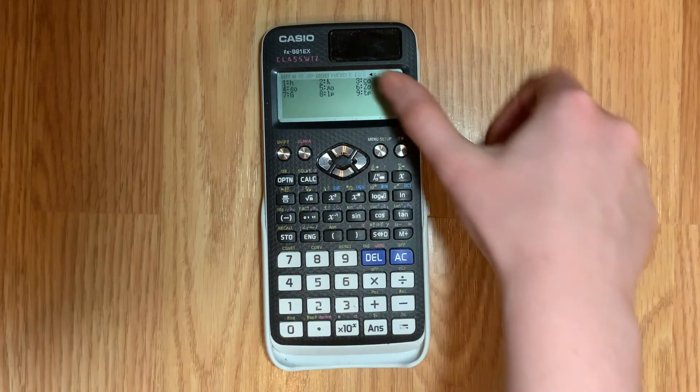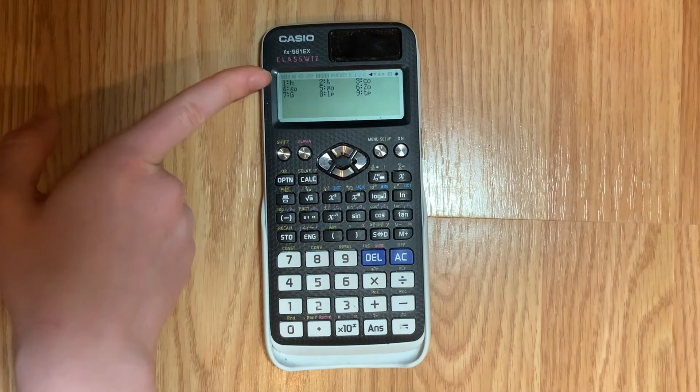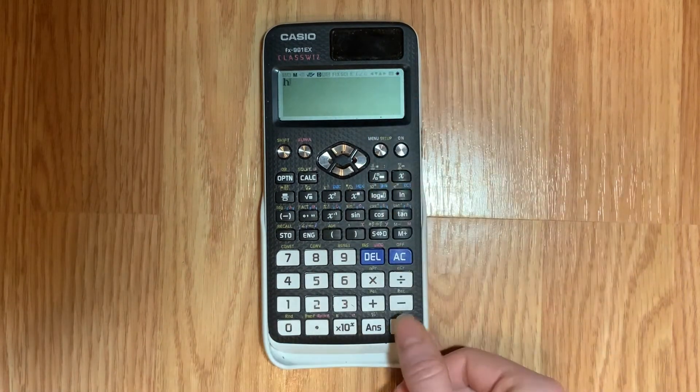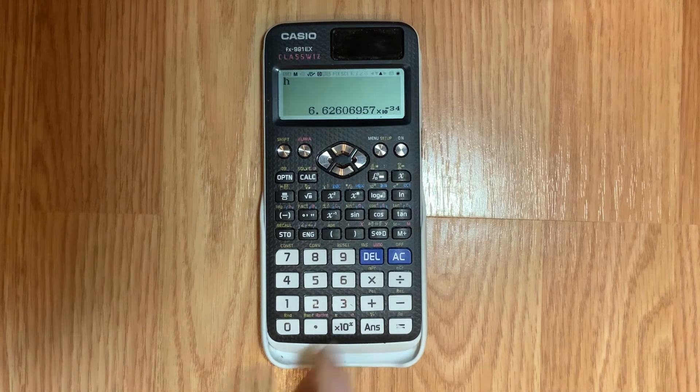I can tell you what this one is, h, and it's next to the number one so to get it you'll just push number one and it'll show in your calculator. This h is called Planck's constant.